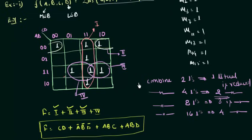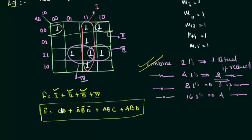One important thing from this lecture: combining two ones eliminates one literal, and combining four ones eliminates two literals — as seen with the first prime implicant. For the second prime implicant we combined two ones and the eliminated literal was C. Keep this rule in mind. In the next presentation we will see another example of the 16-cell KMAP for 4 variables.